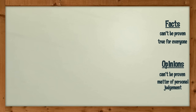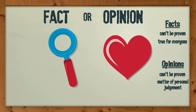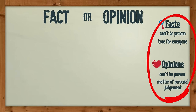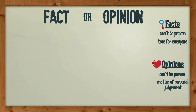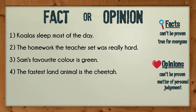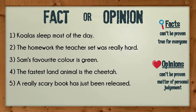Now it's your turn to work out what is fact and what is opinion. You'll be shown five sentences. Use the guide here to help you. Koalas sleep most of the day. The homework the teacher set was really hard. Sam's favourite colour is green. The fastest land animal is the cheetah. A really scary book has just been released. Pause here while you work them out.